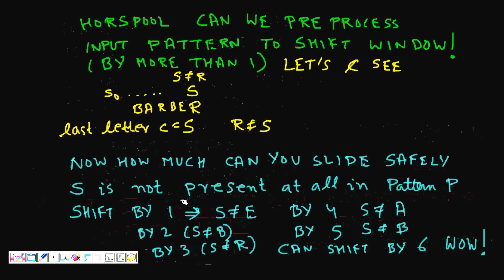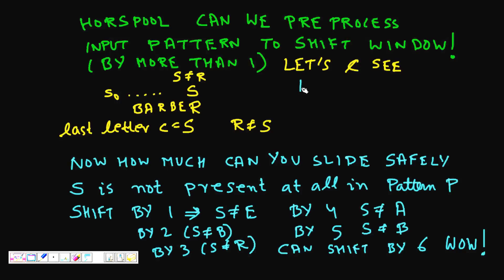In the Horspool algorithm, if we pre-process the pattern and find useful information, we can make shifts larger than one without missing any patterns. That is the beauty and key idea — shifts of length greater than one, up to a maximum of m.